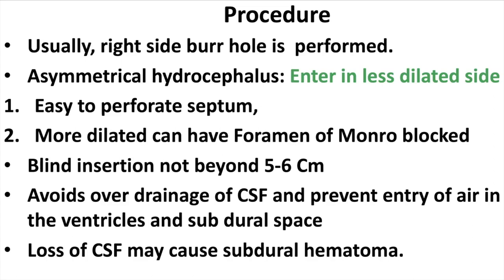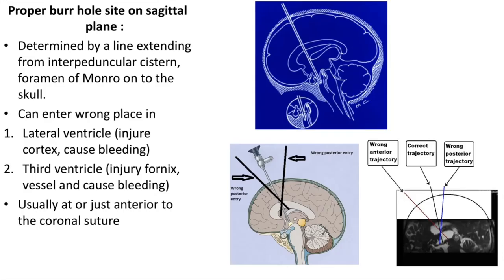When there is asymmetrical hydrocephalus, enter the less dilated ventricle for two reasons: it is easier to perforate the septum, and the more dilated ventricle may have a blocked foramen of Monro. Insertion into the lateral ventricle should not go beyond 5 to 6 cm depth. Avoid overdrainage of CSF and prevent air entry into the ventricle and subdural space, as too much CSF loss may cause subdural hematoma. The proper burr hole site on the sagittal plane is decided by a line extending from the interpeduncular cistern to the foramen of Monro to the skull.